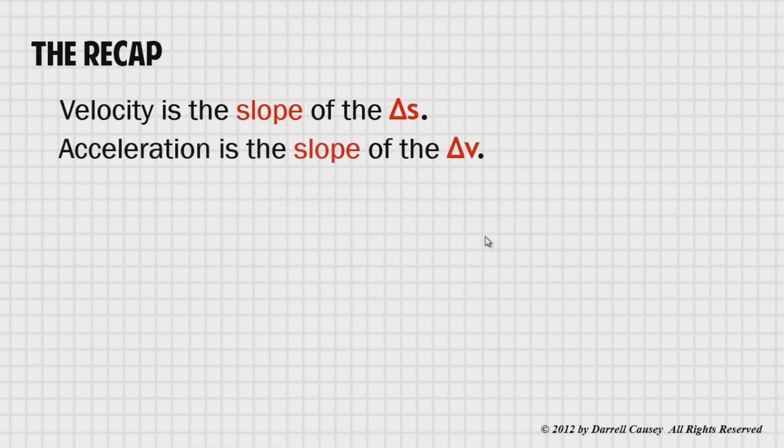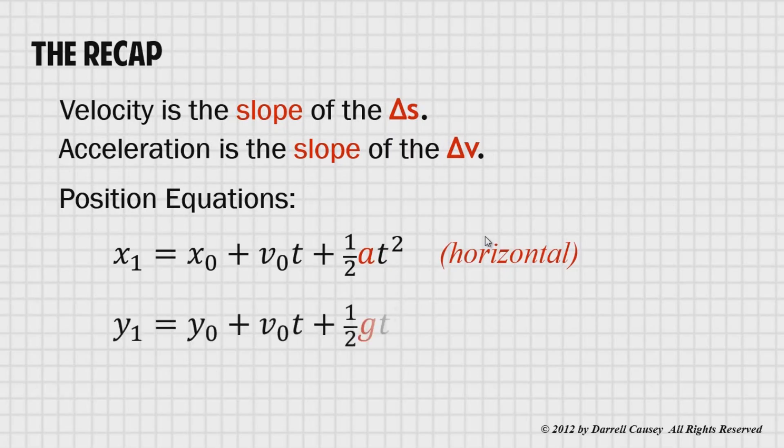In the recap, we looked at the velocity is the slope of displacement, and acceleration is the slope of the change in velocity, or a velocity versus time graph. And position equations, we have the horizontal and we have the vertical. All of these are going to be very useful when we begin to talk about projectile motion.